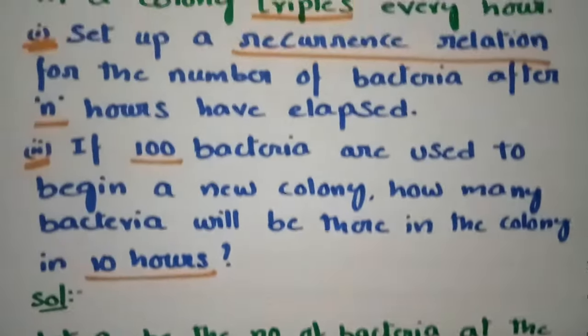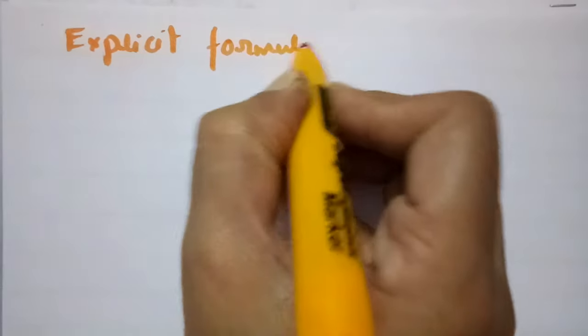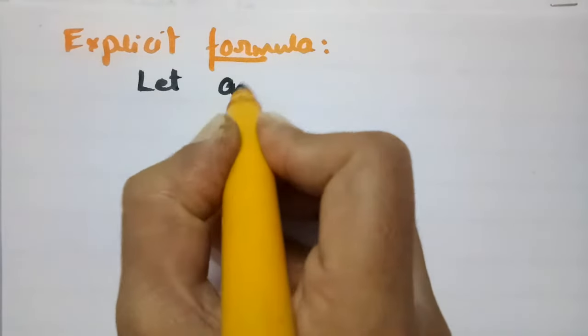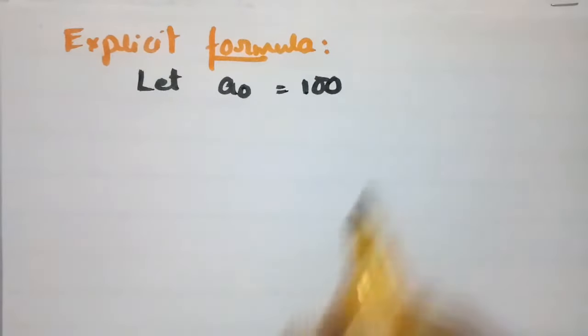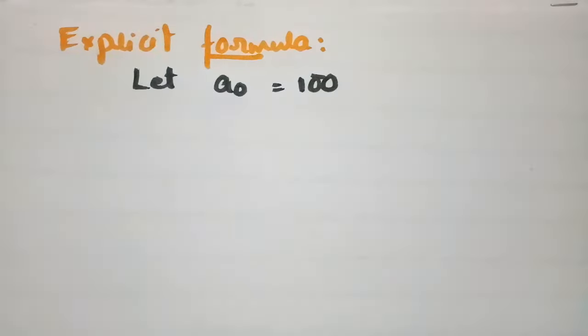Next we have to find the explicit formula. For finding the explicit formula, first of all we take A naught equal to 100. We have the recurrence relation An equal to 3 times of An minus 1.